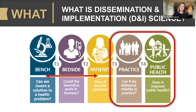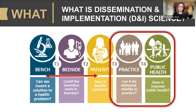In the T1-T4 translational continuum, D&I science is most commonly associated with the T3-T4 area. However, we believe there are opportunities to design for dissemination, implementation, and sustainment by incorporating D&I science principles in earlier T stages, as early as T1 or T2. While most people are doing work in T3-T4, we interact with researchers and practitioners in T1-T2 as well, thinking about how to improve scalability.